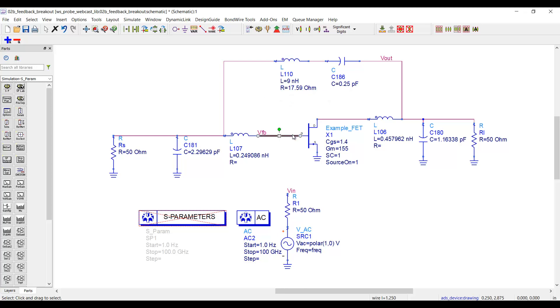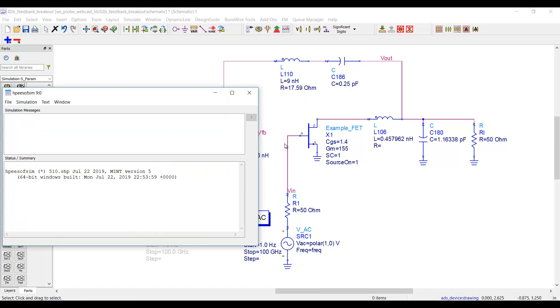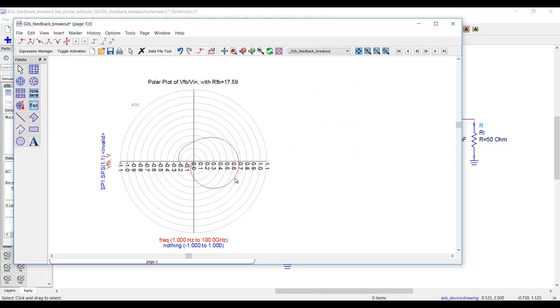You might also remember from the last video, to compute loop gain, I broke the connection between the feedback and amplifier. And then I inserted an AC source and injected a signal, and then I plotted the return voltage on the other side of the feedback loop. With the new resistor value, I can do the same thing. And now this circuit looks stable. So we're good.